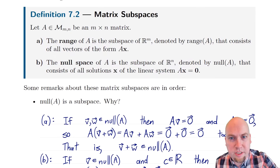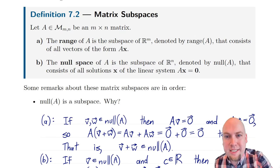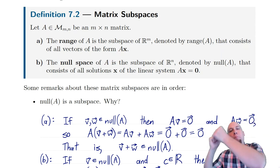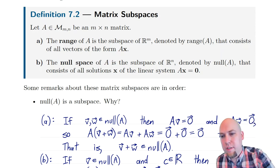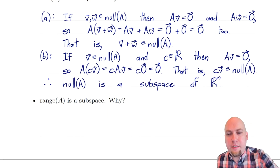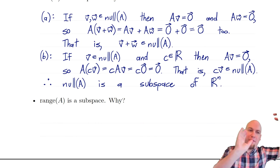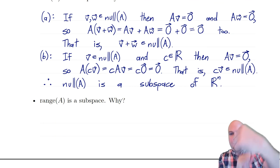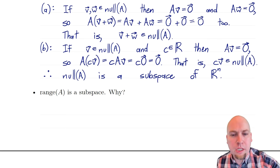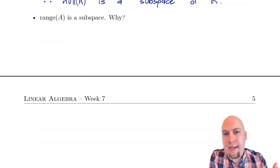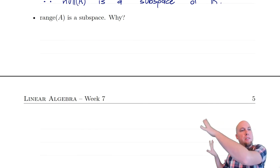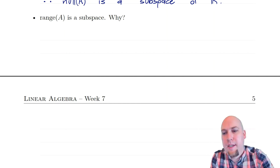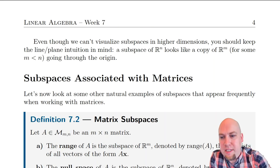Just a note on dimensions: if the matrix is M by N, then the input space is N-dimensional and the output space is M-dimensional. The null space is a collection of input vectors, so it's a subspace of R^N. The range is a subspace of the output space — it's the set of all possible outputs of the matrix.